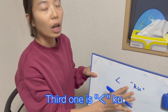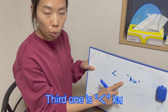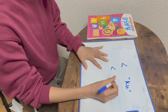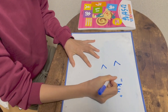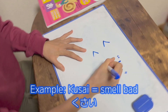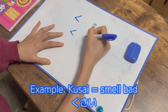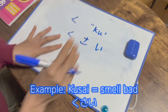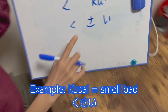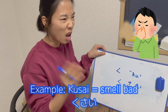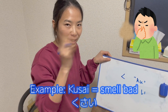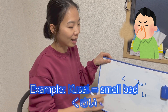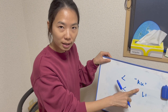The third one is ク (ku). The example can be a word that means smell so bad.